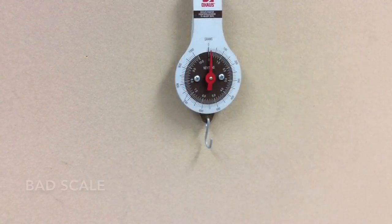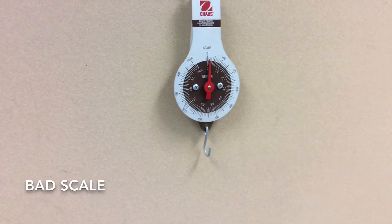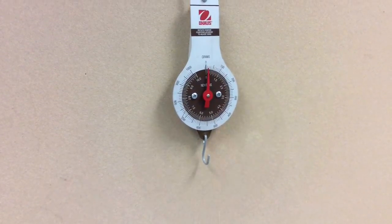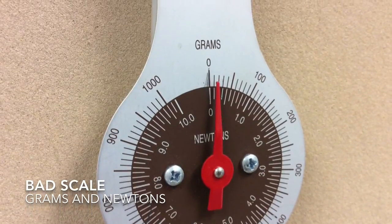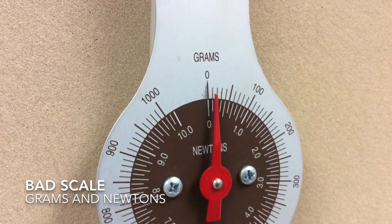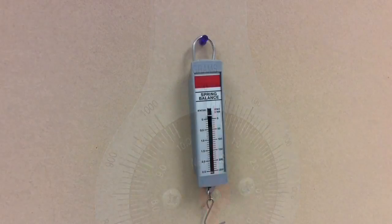But since mass and weight, scales and balances are always confused, here's an example of a bad scale given to us by a scientific supply house. It has both grams, mass, and newtons force or weight on the same scale.